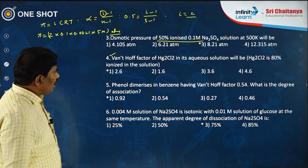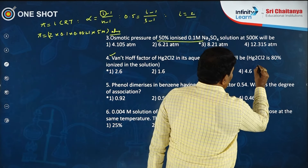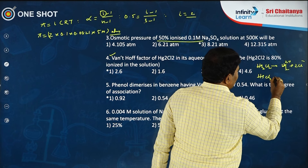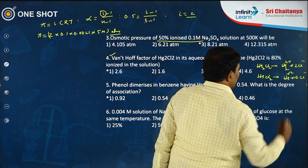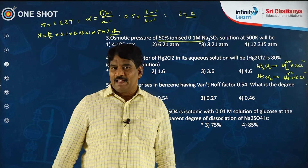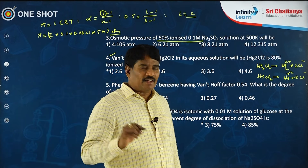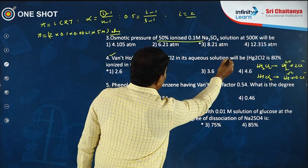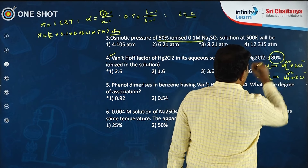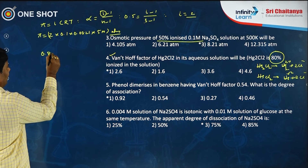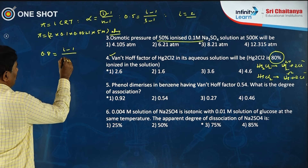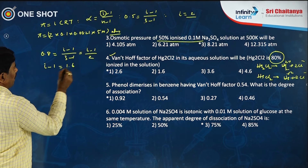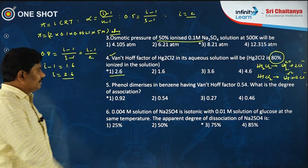For Hg₂Cl₂: it ionizes as Hg₂Cl₂ → Hg₂²⁺ + 2Cl⁻, giving 3 ions. HgCl₂ → Hg²⁺ + 2Cl⁻ also gives 3 ions. So both Hg₂Cl₂ and HgCl₂ give the same number of ions (n = 3). For 80% ionized Hg₂Cl₂: α = 0.8 = (i−1)/(3−1) = (i−1)/2, so i−1 = 1.6, giving i = 2.6.